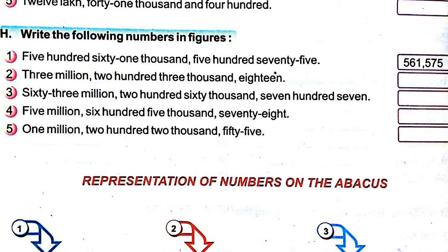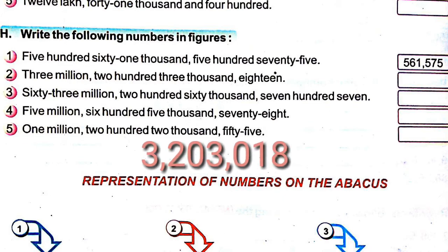Next question: 3 million 203 thousand 18. That is in millions period 3, in thousands period 203, and ones period 18. So the number is 3,203,018.